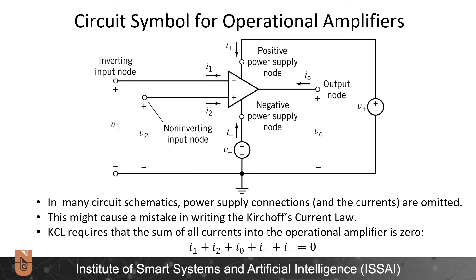The circuit symbol for operational amplifiers is a triangle with minus and positive signs. It has two inputs: the inverting input with a minus sign and the non-inverting input with a positive sign, and the output node. And even though it is omitted in many schematics, we also have positive and negative power supplies.